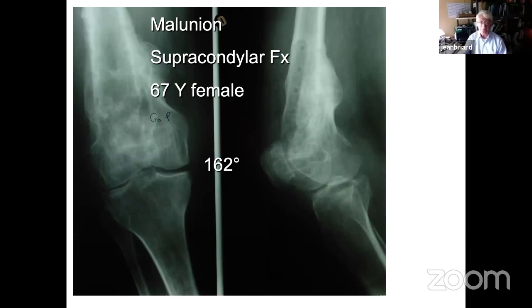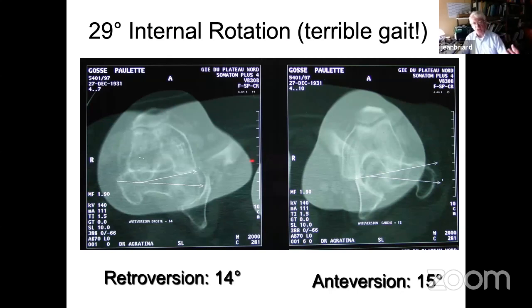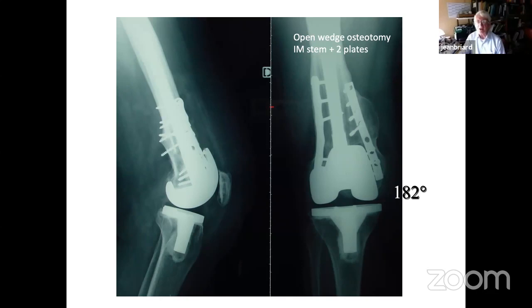A more complicated case: a woman with supracondylar fracture, fed up with two years of surgery, insisted on a total knee. She had 30 degrees of internal rotation causing very poor gait. Despite attempts to convince her osteotomy would be better, she refused. An open wedge was performed with an IM rod and two plates — the correction is nicely achieved here.